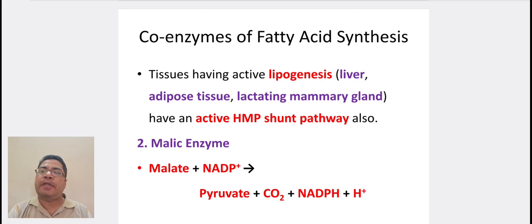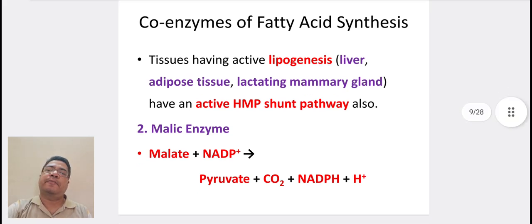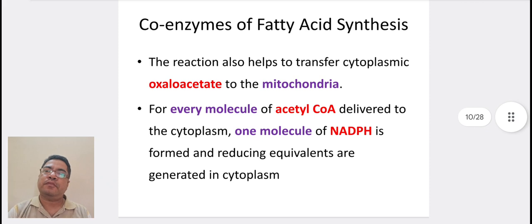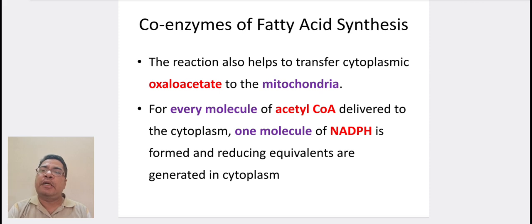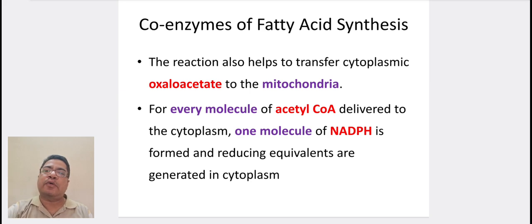The second source is malic enzyme. Malate plus NADP⁺ gives pyruvate plus CO₂ plus NADPH. The reaction also helps the transfer of cytoplasmic oxaloacetate to the mitochondria. For every molecule of acetyl-CoA delivered to the cytoplasm, one molecule of NADPH is formed, and reducing equivalents are generated in the cytoplasm.